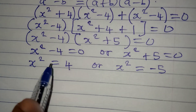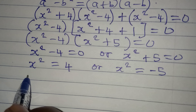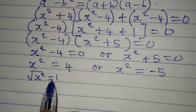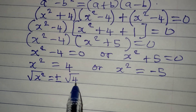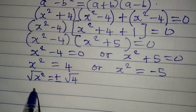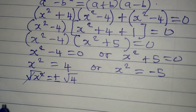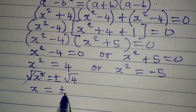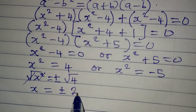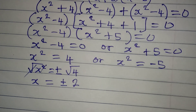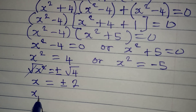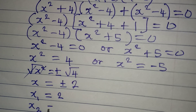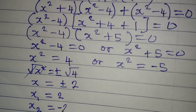Let's deal with x squared equals 4 first. Taking the square root of both sides, the square root and the square cancel, giving x equals positive or negative square root of 4, which is 2. So x₁ equals 2 and x₂ equals negative 2.